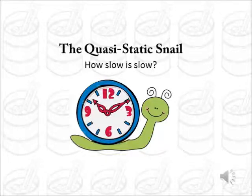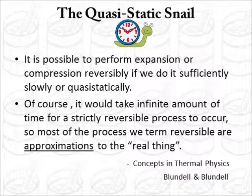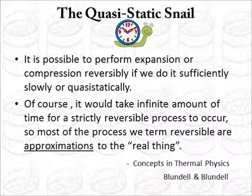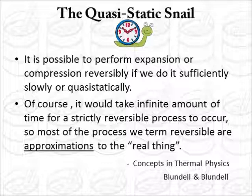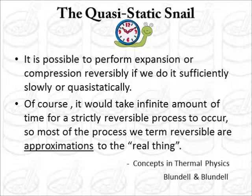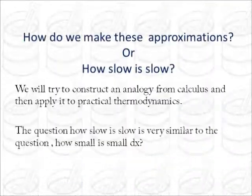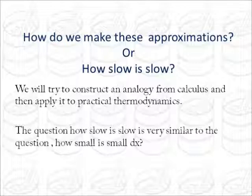Let's begin with it. Now concentrate on these two statements. It is possible to perform expansion or compression reversibly if we do it sufficiently slowly or quasi-statically. Of course, it would take infinite amount of time for a strictly reversible process to occur. So most of the processes we term reversible are approximations to the real thing. Now concentrate on the word approximations. So how exactly do we make these approximations? Or in other words, how slow is slow?